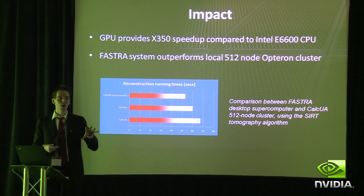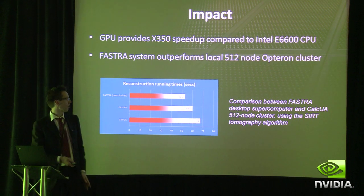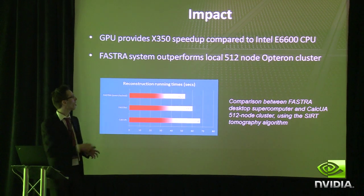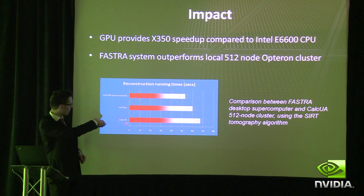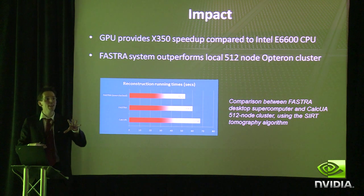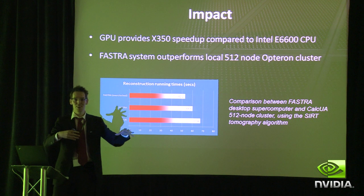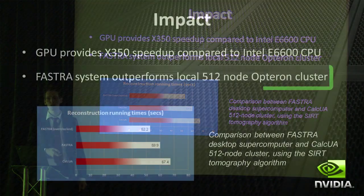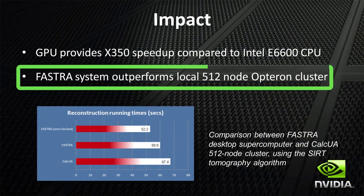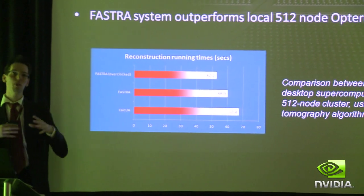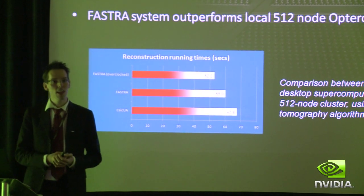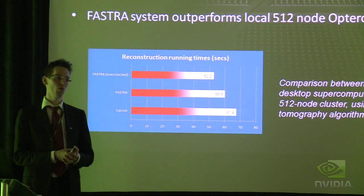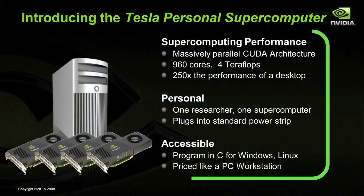We also have, at a different department within our university, an optical cluster. It was installed three years ago, it's called the CalQA. The mathematics department is really proud of it, but we are the physics department, so there's some competition in there. We took it for a test drive with our software, and it turns out that this 512-node Opteron cluster was not able to outperform our 8-GPU desktop system. Tomography is particularly suitable for parallelization, and it runs wonderfully on a GPU — it really is supercomputer performance.